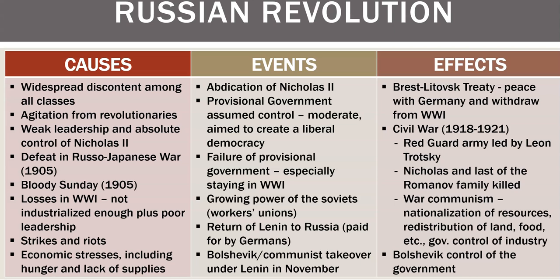Bloody Sunday: the priest Father Gapon told everybody they're starving and working conditions are bad, but the Tsar doesn't know. So they'd march to his palace with a letter. The Cossacks wound up killing a whole bunch of people — many were stampeded and died, and the Tsar wasn't even in the palace. Strikes, riots, economic stresses — the triggering event is bread riots, a similarity between the French Revolution and the Russian Revolution. He abdicates and there's a provisional government.